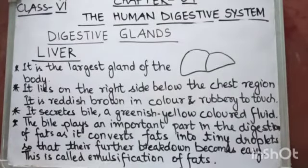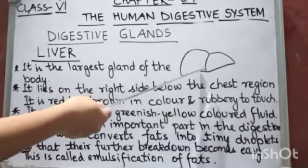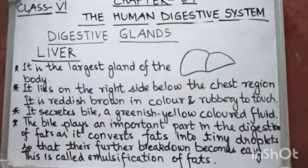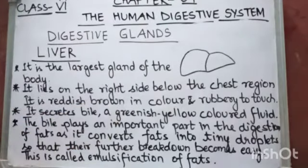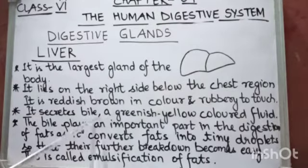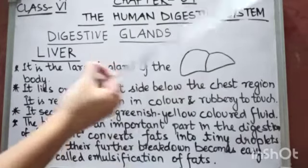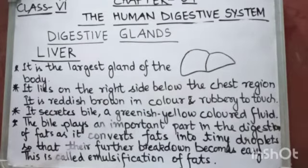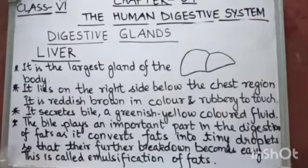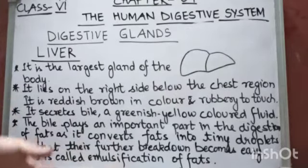The second digestive gland is the liver. The liver is the largest gland of the body. As you can see its structure, it lies on the right side below the chest region, is reddish-brown in color, and rubbery to touch. It secretes bile — a greenish-yellow colored fluid. Bile plays a very important part in the digestion of fats because it converts fats into tiny droplets to make further breakdown easier. This whole process is called emulsification of fats.